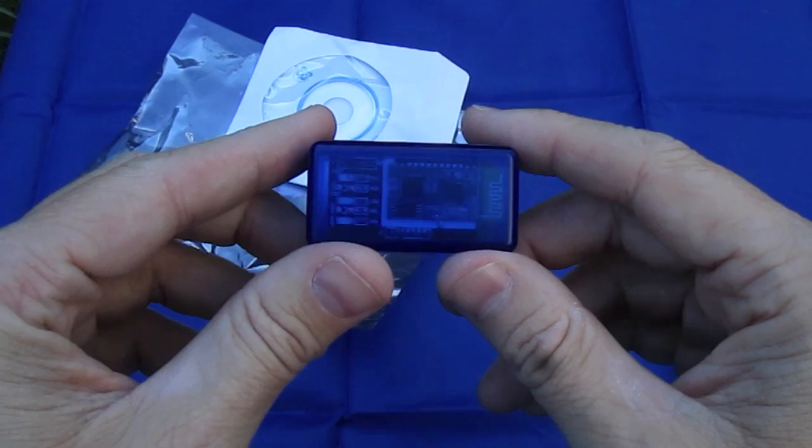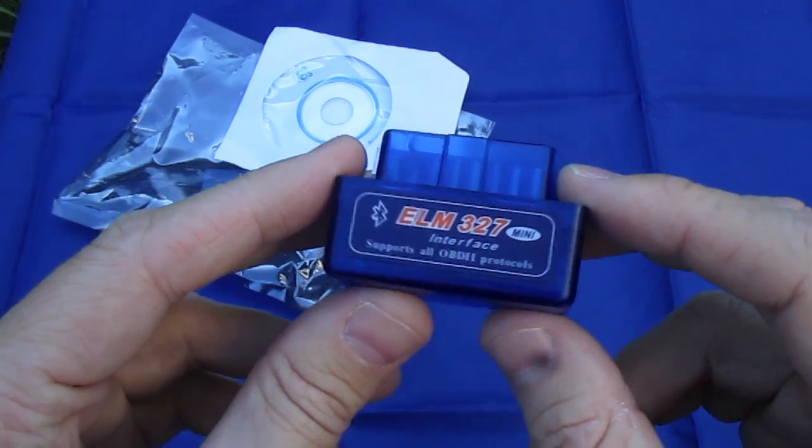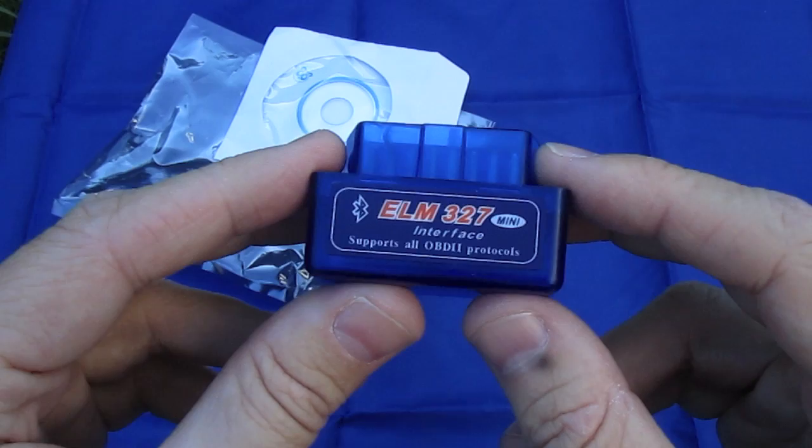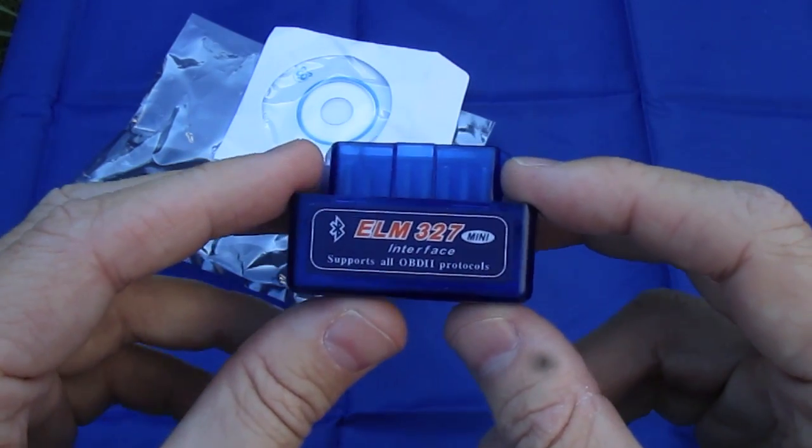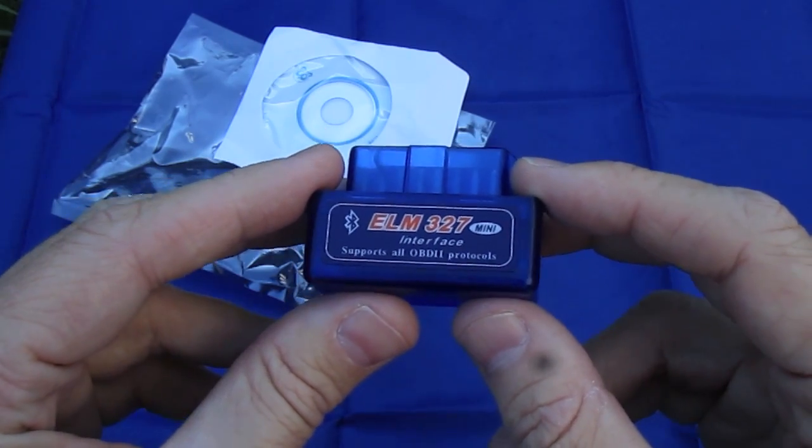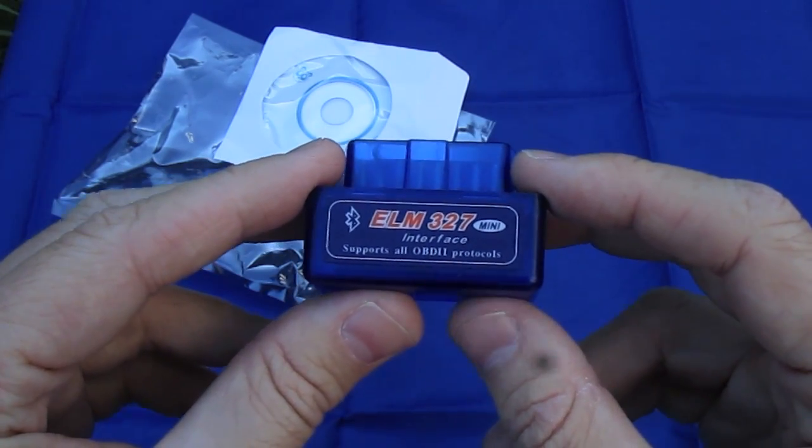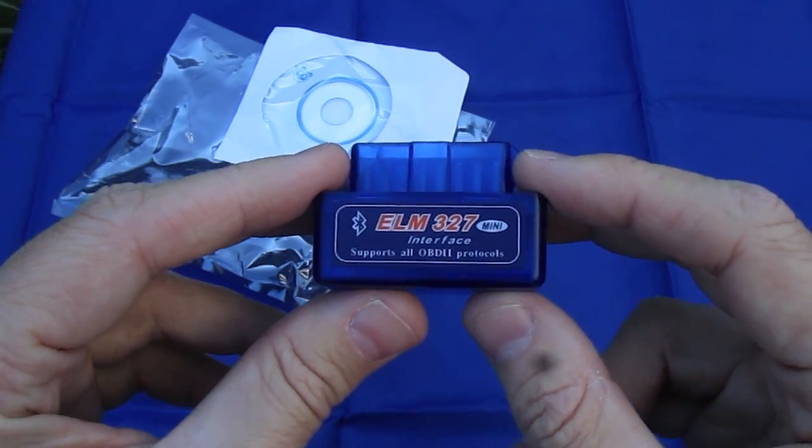Something to look for. Again, it's an OBD2 Bluetooth reader. So if you wanted to go in and see what that error light is on your vehicle, what's going on, why is it flashing with the check engine light, you plug this thing in, download an application onto your Android device.